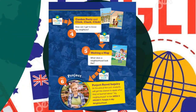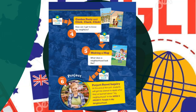The essential question for week three is: how do signs in our neighborhood help us? In week four, we will read Garden Party and Click Clack Click. The essential question is: how can I get to know my neighbors? Then, after reading and learning about different texts, we will have a project-based inquiry — you're going to build your own town or make a map. We will decide on it later.